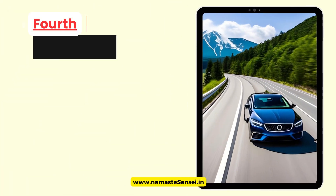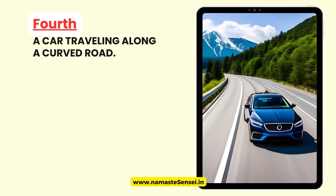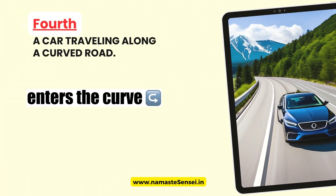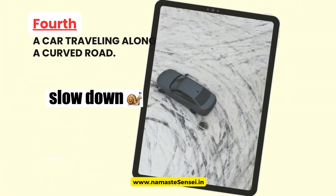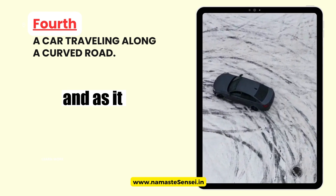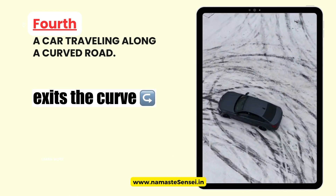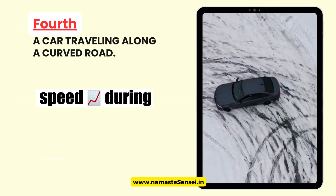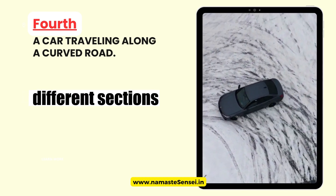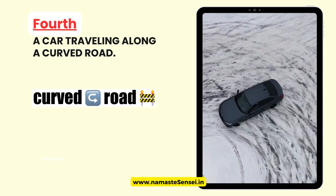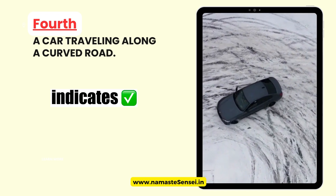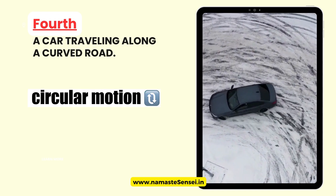Fourth, a car traveling along a curved road. As the car enters the curve, it may slow down, and as it exits the curve, it may accelerate. The changing speed during different sections of the curved road indicates non-uniform circular motion.